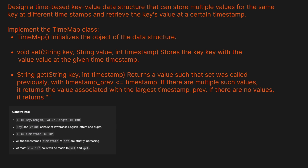Design a time-based key-value data structure that can store multiple values for the same key at different timestamps and retrieve the key's value at a certain timestamp. We want to implement a TimeMap class. The set method takes a string key, a string value, and an integer timestamp and stores the key-value pair at that timestamp. The get method takes a string key and an integer timestamp and returns the value where the previous timestamp is less than or equal to the given timestamp. If there are multiple such values, it returns the one with the largest previous timestamp. If there's no value, return an empty string.